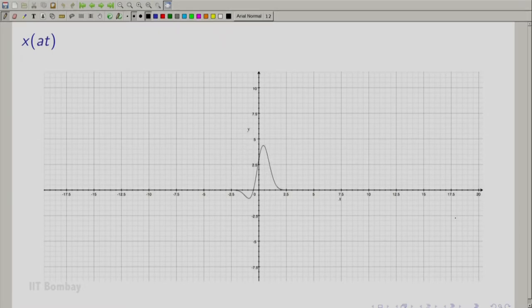Next, we go to x(at), a as I reminded you earlier is greater than 1. As you can see the plot has compressed here and I can see that Ashwit here has a confused face. He might want to say something.